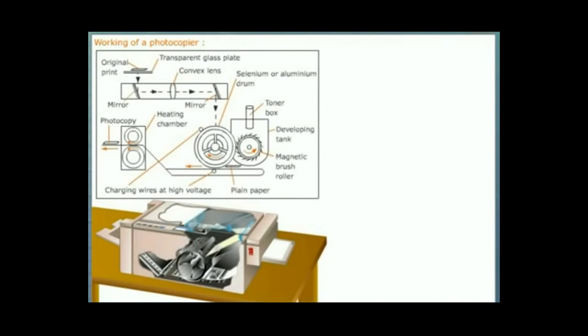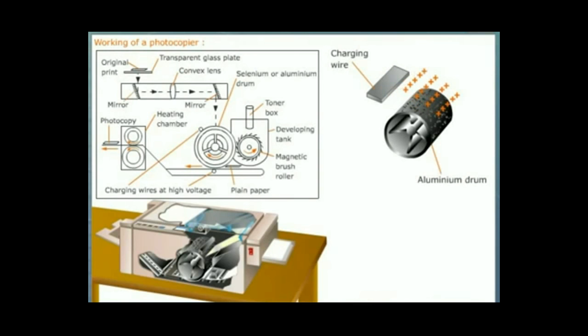Let us see what happens when a printed matter is placed on the copier. The charging wire which is at high voltage emits positive ions. The atoms of selenium present on the aluminum drum emit electrons to neutralize the positive ions. Thus, the drum acquires positive charge. Selenium drum conducts charge only when exposed to light.